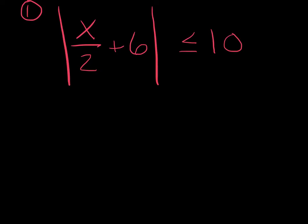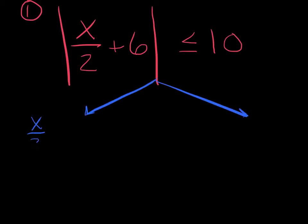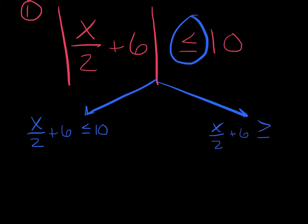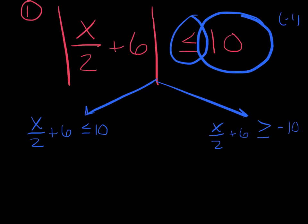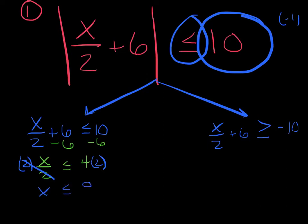Example 1: the absolute value of x over 2 plus 6 is less than or equal to 10. Is the absolute value already isolated? Yes. So I'm going to break up into two branches. First one, we leave alone: x over 2 plus 6 is less than or equal to 10. Solving: subtract 6, x over 2 is less than or equal to 4. Multiply both sides by 2 — x is less than or equal to 8.